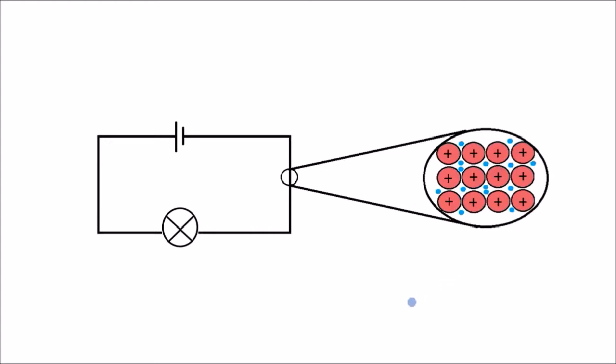Okay, so let's start with current. First we want to think about what electrical current actually is. So if we take a look at copper wire with current flowing through it, what's actually happening? If we zoom in on the copper wire, we can see its metallic structure.